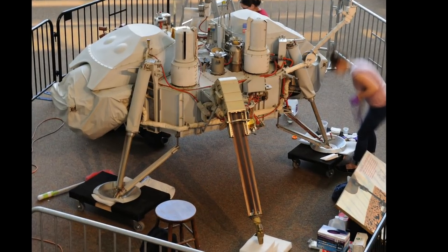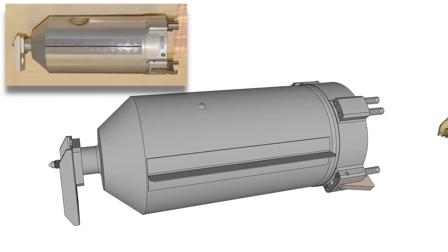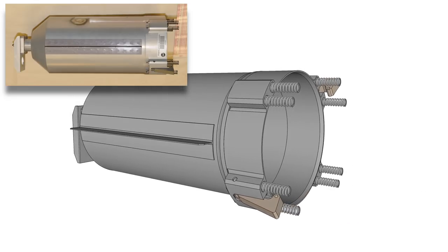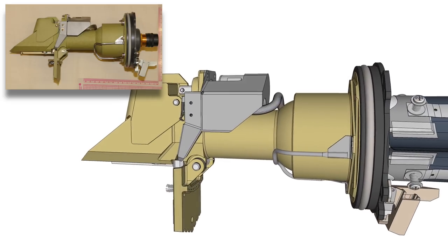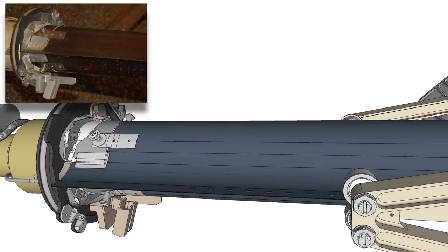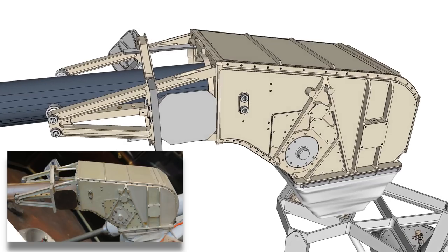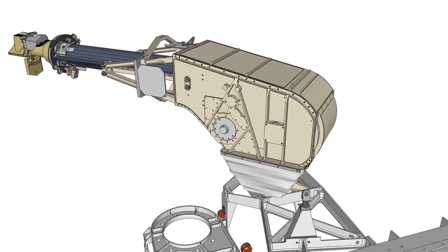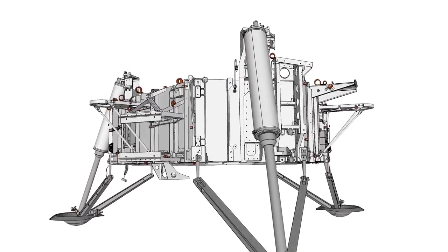The Viking lander's surface sampler consisted of a few major components. A shroud unit or cover seals and protects the pre-sterilized collector head until shortly after landing on Mars. A collector head or scoop digs into the surface of Mars and is mounted on the end of a boom or arm. The arm extends from and retracts into the main surface sampler housing assembly mounted on the lander.